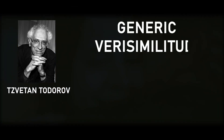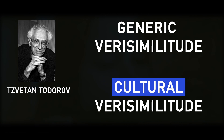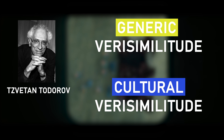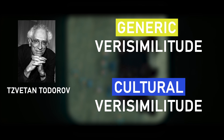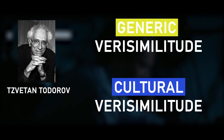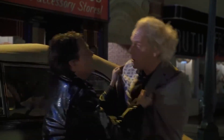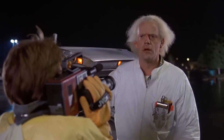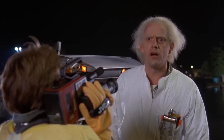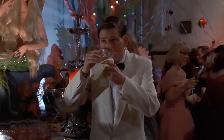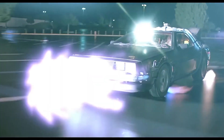Bulgarian philosopher Cvetan Todorov describes two types of verisimilitude: generic and cultural. Cultural verisimilitude is the normal in our reality. Generic verisimilitude is, in short, the normal of a specific world of a narrative. In Back to the Future, for example, the generic verisimilitude is the fact that time travel exists. This fact doesn't break the generic verisimilitude of the narrative. However, if halfway through the movie they suddenly changed how time travel works, it would break the generic verisimilitude.